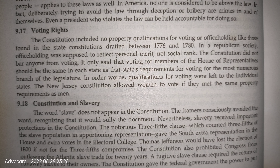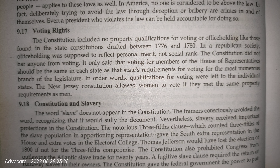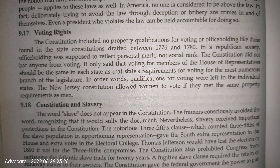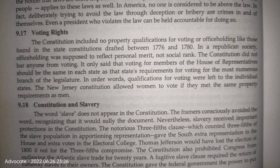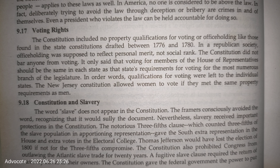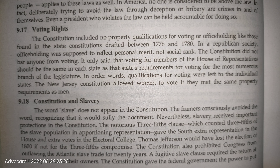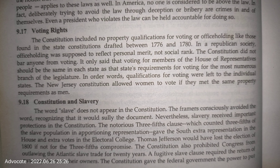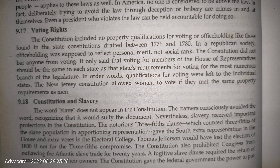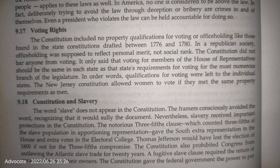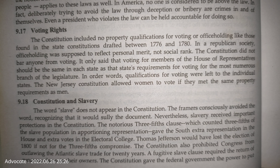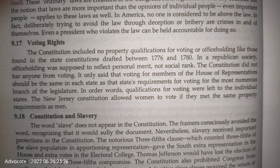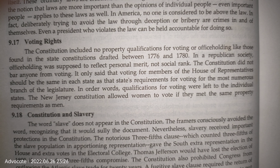The Constitution included no property qualifications for voting or office holding, unlike those found in the state constitutions drafted between 1776 and 1780. In a republican society, office holding was supposed to reflect personal merit, not social rank. The Constitution didn't bar anyone from voting; it only said that voting requirements for members of the House of Representatives should be the same in each state as the state's requirements for voting for the most numerous branch of the legislature. In other words, qualifications for voting were left to individual states.